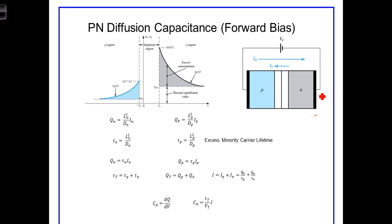This type of capacitance is referred to as the diffusion capacitance. It's related to the excess minority carriers located in the P and N regions outside the depletion region.